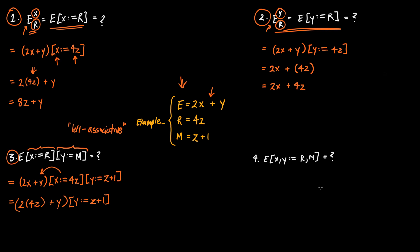Now we can perform the second textual substitution. We leave the 2 times (4Z) as it is and replace Y with Z plus 1, giving plus (Z plus 1). Expanding, we get 8Z plus Z plus 1, which is 9Z plus 1. That would be the answer to this textual substitution.